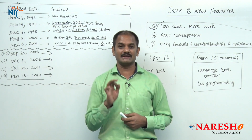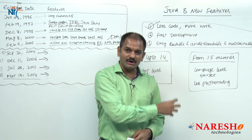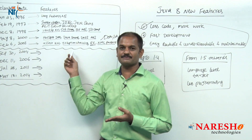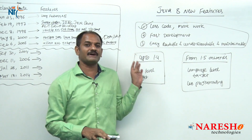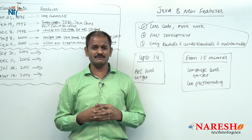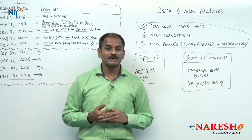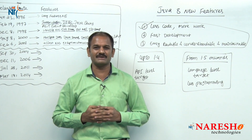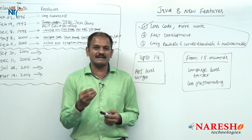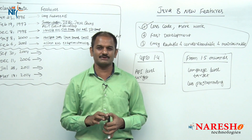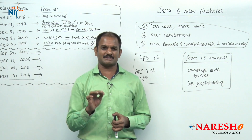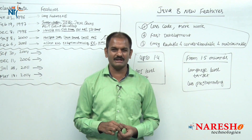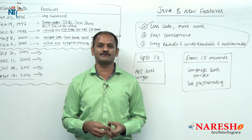We have to compulsorily learn every feature from 1.5 onwards. I would like to list out all features for 1.5, 1.6, 1.7, and 1.8. Up to 1.4, if you remember or not — not an issue. But from 1.5 onwards, every feature you have to remember. If an interviewer asks 'Do you know something about generics, in which version it was given?' or 'For-each loop, in which version?' and you say you don't know — that is not good. Being a Java developer, at least the latest feature versions you have to remember. Maximum it will take 5 to 10 minutes.